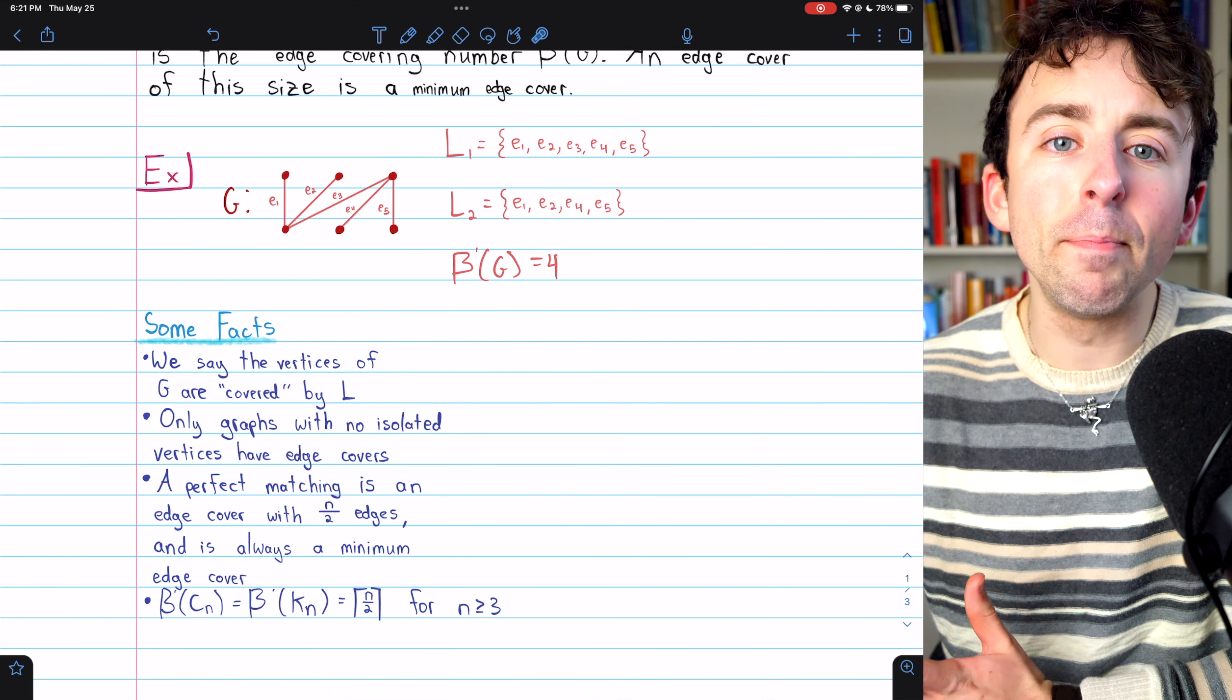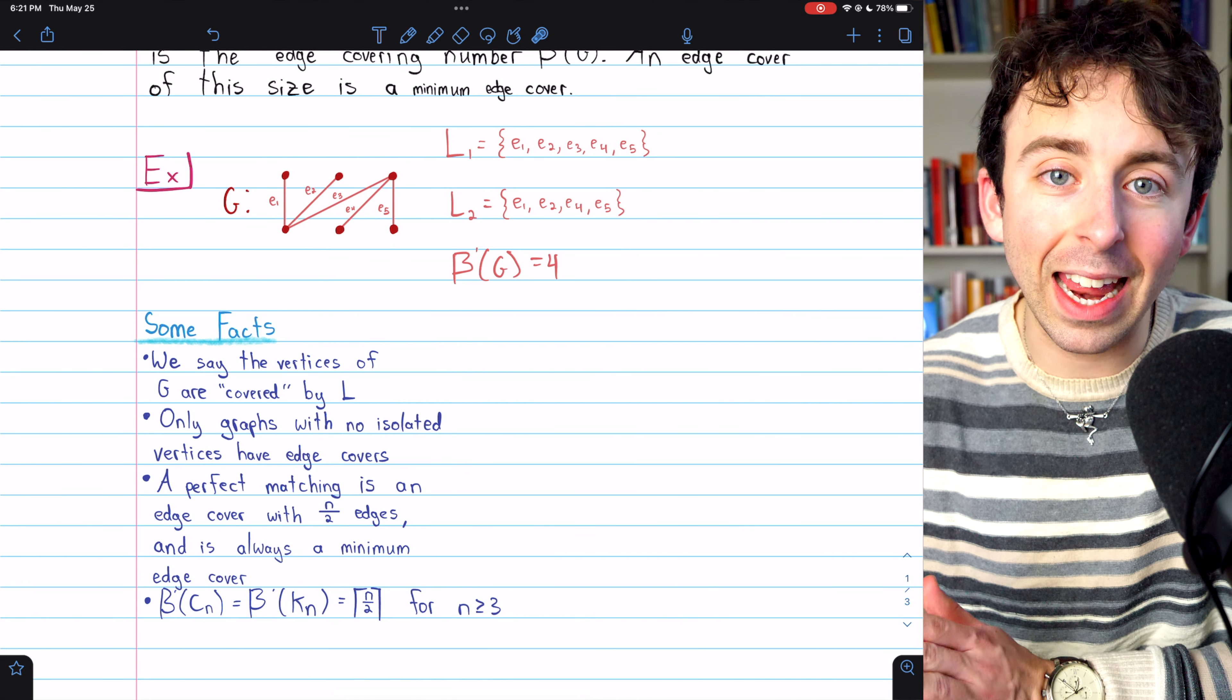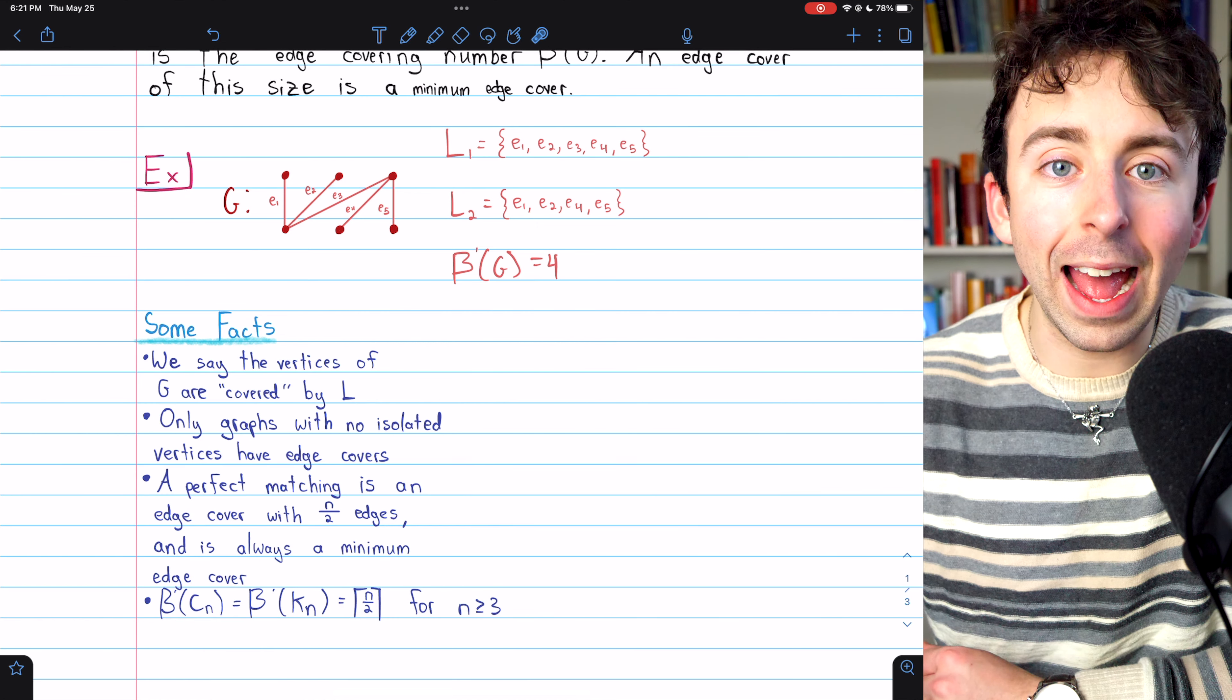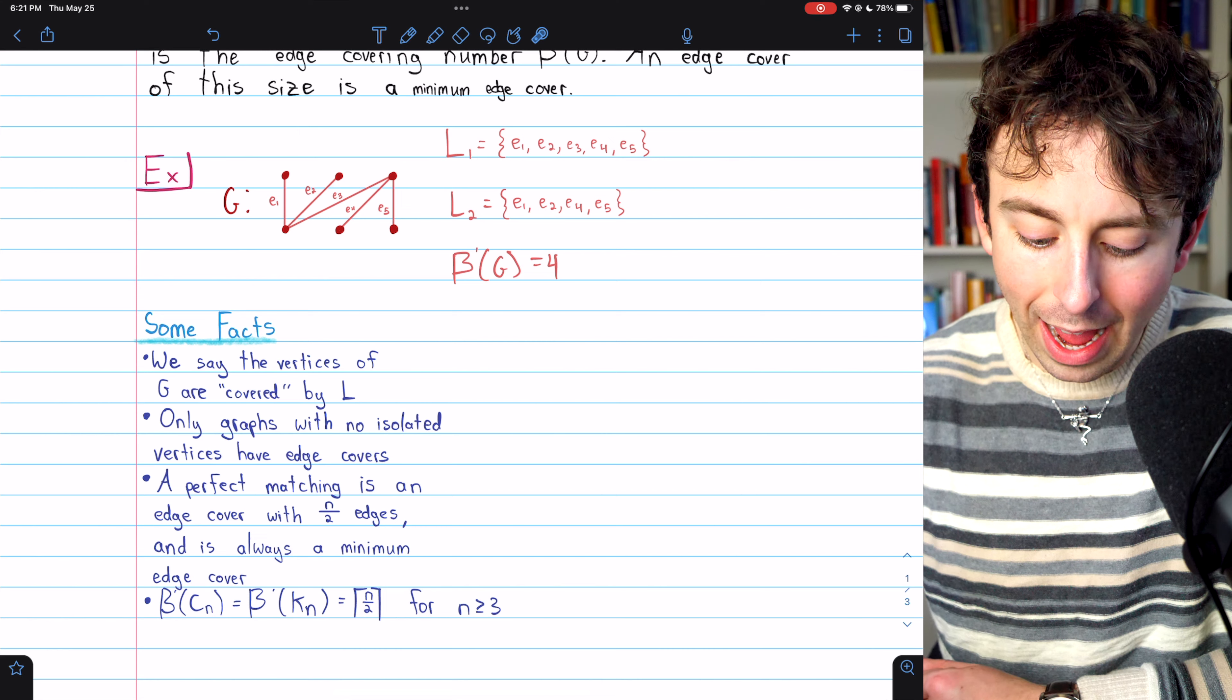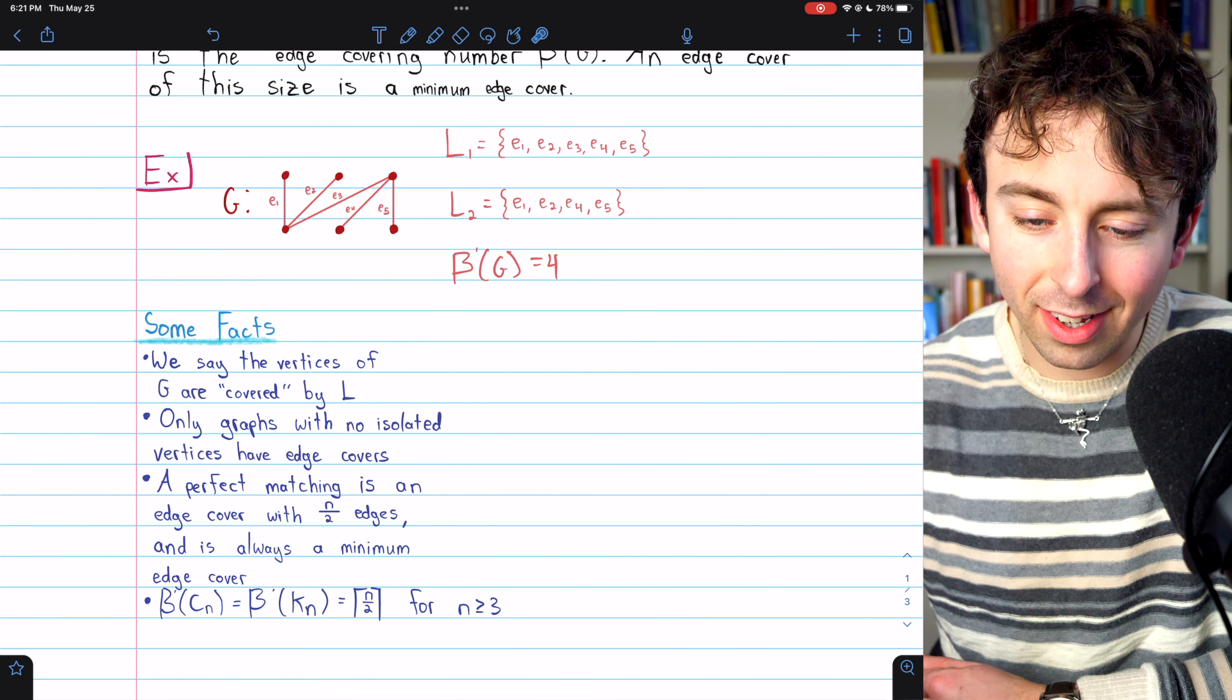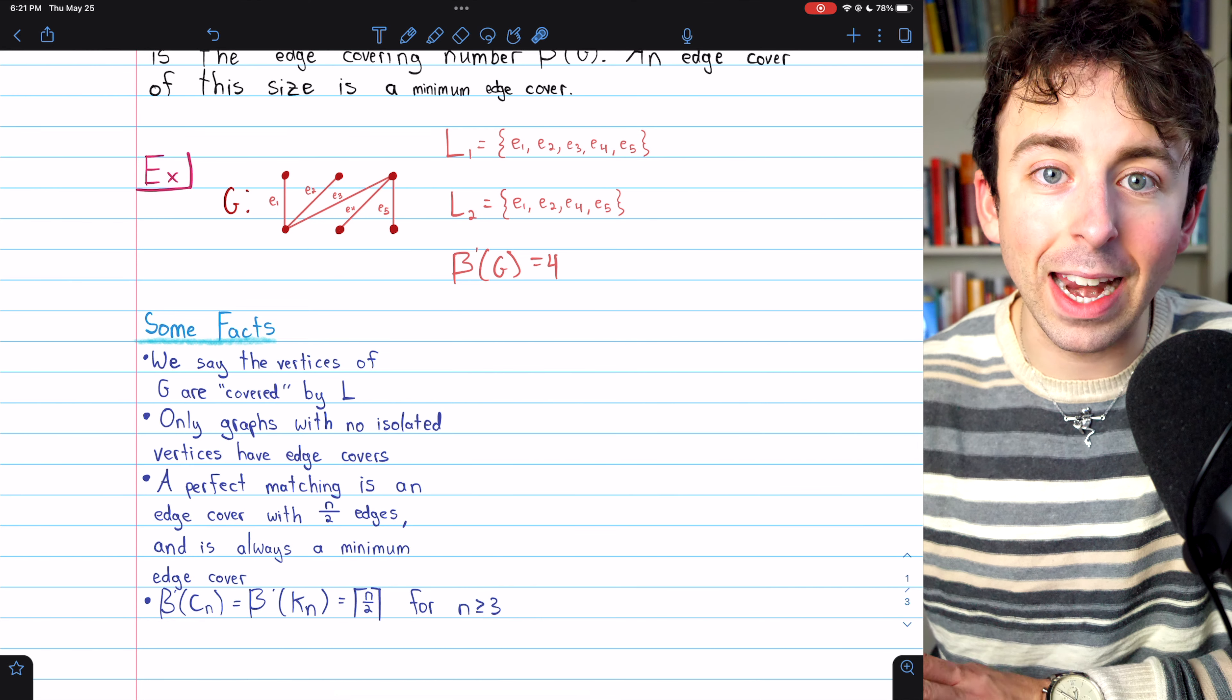That's because each edge could at most cover two new vertices that aren't covered by any other edge in your edge cover. So the most efficient possible edge cover would have N over two edges.